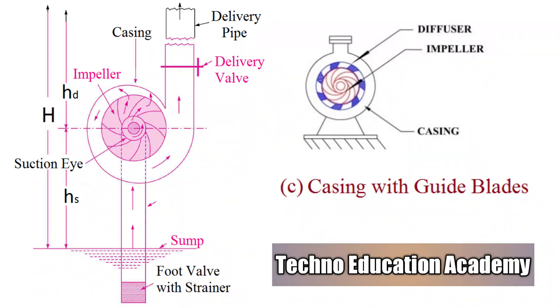Third one type of casing is casing with guide vanes or diffuser type. Here an impeller is surrounded by series of guide blades mounted on a ring which is known as diffuser. The guide blades are designed in such a way that the water from the impeller enters the guide vanes without shock. Also the area of the guide vanes is increased thus reducing the velocity of flow through guide vanes and consequently increases the pressure of water. This pump gives more pressure head as compared to vortex types and volute types construction. The diffuser type of pump has therefore higher efficiency. These pumps are also called turbine pumps.